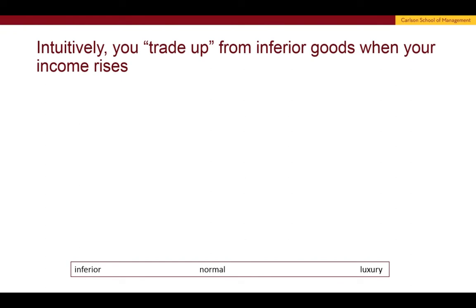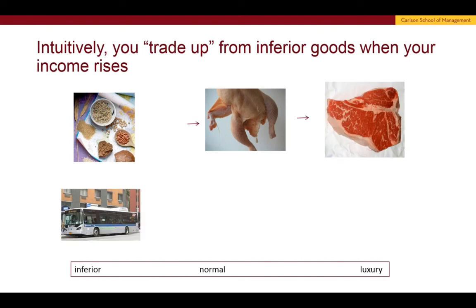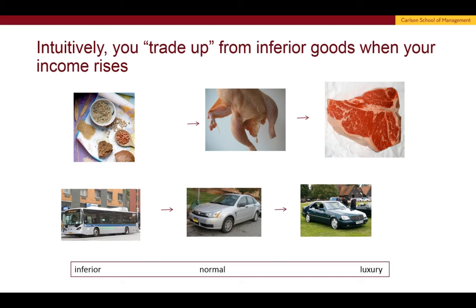Intuitively, when you think about this taxonomy of goods from inferior to normal to luxury, you could think about people trading up from inferior goods when their income rises. When you're really poor, you can just afford to eat grains. When you get somewhat more well-to-do, you can afford chicken, and then steak. In the transportation sphere, when you don't have much income you'd ride a bus; with some income you'd have a used car; and with a lot of income you might buy a Mercedes-Benz. As we move from left to right, we go from inferior to normal to luxury goods.